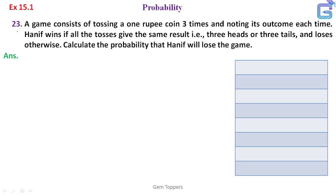Question number 23: A game consists of tossing a 1 rupee coin 3 times and noting its outcome each time. Hanif wins if all the tosses give the same result, i.e., 3 heads or 3 tails, and loses otherwise. Calculate the probability that Hanif will lose the game.